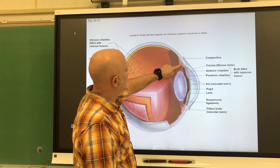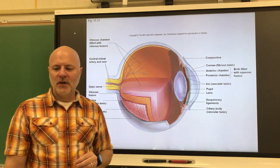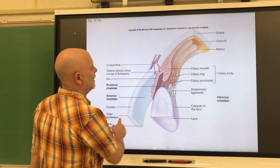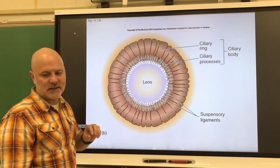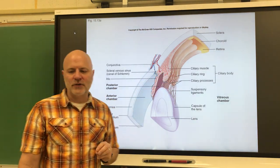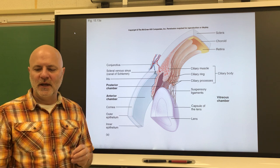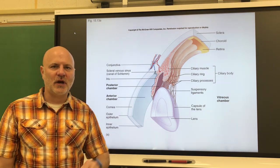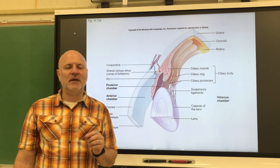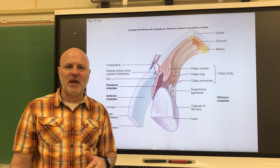Following the choroid to the front of the eye, it enlarges into what is known as the ciliary body — an internal ring around the front of the eye. The ciliary body has ciliary processes that secrete fluid into the interior of the eye, which we'll discuss later. Attached to those are suspensory ligaments that hold the lens in place. The ciliary muscles adjust the shape of the lens.